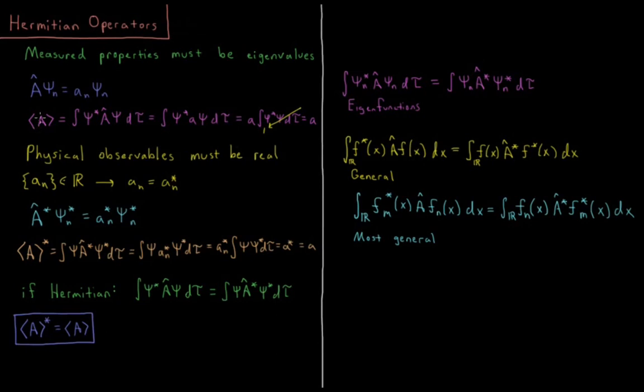So the expectation value of A, or the average value of A, if it's an eigenvalue, we saw was the integral of psi star times the operator A acting on psi, integrated over all space, integrated over all real numbers. And that is equal to the integral of psi star - so A psi equals little a psi - so we can substitute little a in there. Little a is a constant, so we can factor out little a. So we get A times the integral of psi star psi overall space.